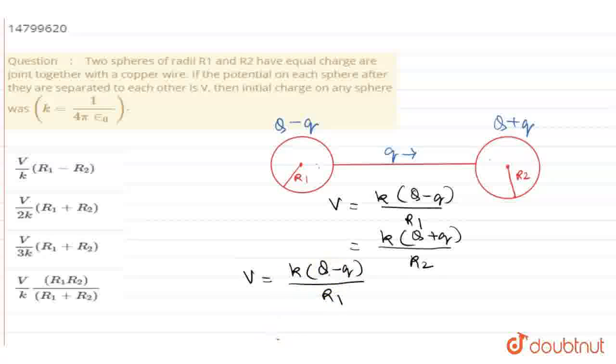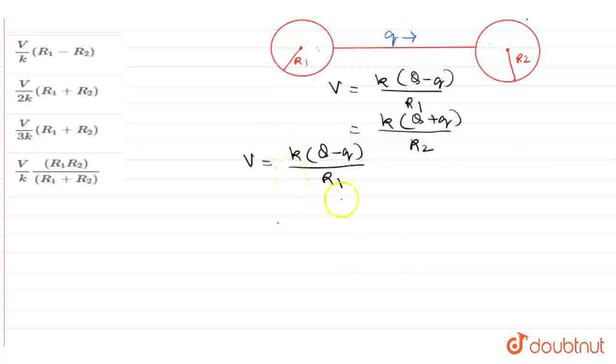From here we can find the value of small q. We can write R1V/k, so small q will be equal to Q - R1V/k. We have found small q. Now we will put this value of small q into the second equation.